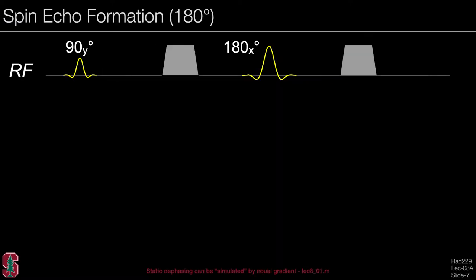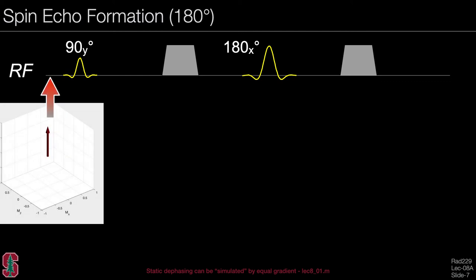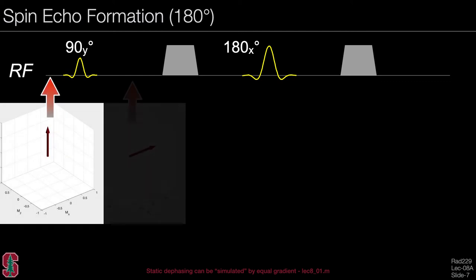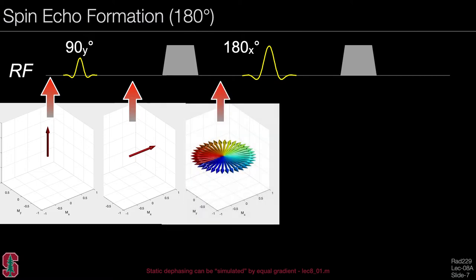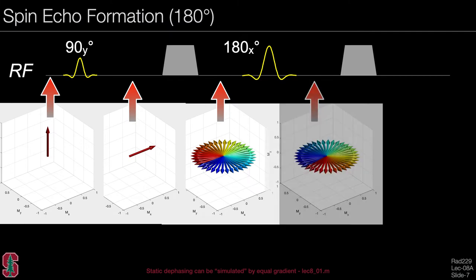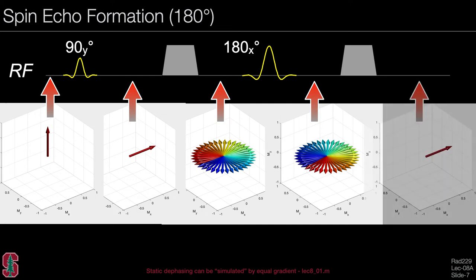Let us look more slowly at the formation of a spin echo. Gradients are used to induce dephasing effects before and after the refocusing pulse. We start with magnetization at equilibrium, excite it into the transverse plane, and it is dephased by a gradient. The refocusing pulse then flips this dephased magnetization, and the magnetization rephases to form a spin echo.